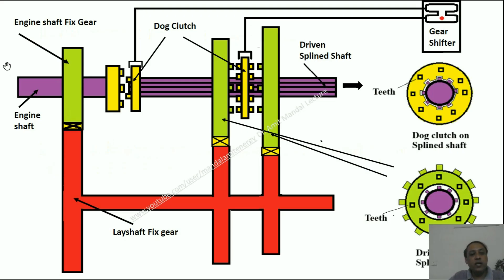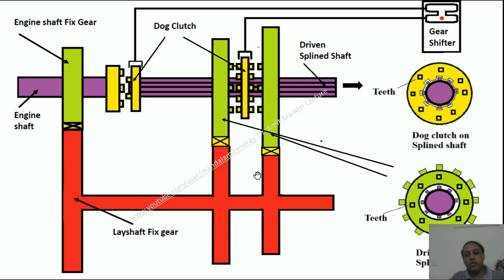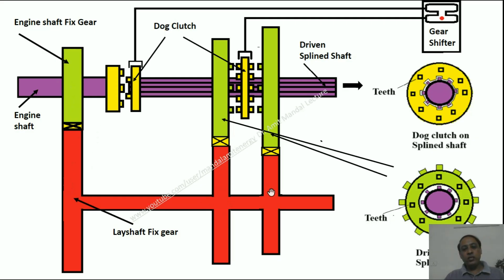Looking at this schematic diagram, you can see the engine shaft where power from the engine arrives. There is an engine shaft fixed gear, and then a layshaft fixed gear — this is the layshaft with its gear. This engine shaft gear drives the layshaft gear. Using a three-gear system as an example, power from the engine reaches the green-colored fixed gear, then to the layshaft gear, and through the shaft to two more gears.